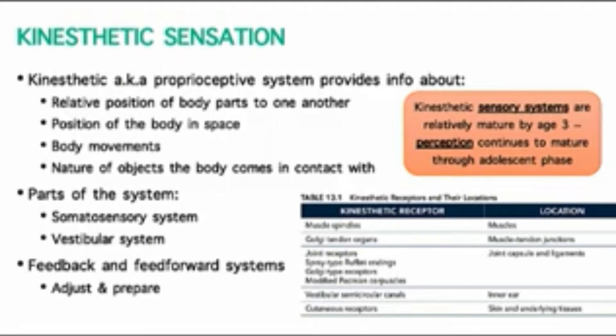Oftentimes the kinesthetic sensory system or proprioceptive system are used interchangeably, and they tell us where our body is in space — also where certain body parts are in relation to each other, how our body is moving, what direction body parts are moving in, and we can look at the nature of objects the body comes in contact with.